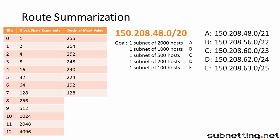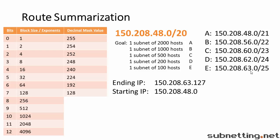Then we write out the starting IP, which is the first network's starting IP — so this is our starting address. For the ending IP, we look at the last network. This is a slash 25 in the fourth octet, and our block size is 128. So that means the start of the next network is .63.128. The ending IP address is one less than that, which is 63.127. Now all we have to do is find the subnet mask that covers this entire range with the least amount of wasted address space.